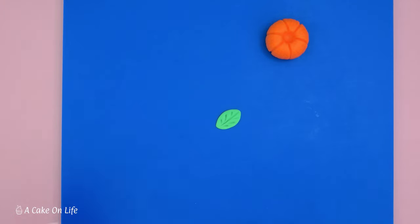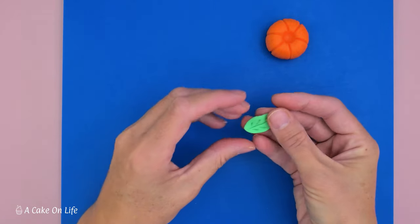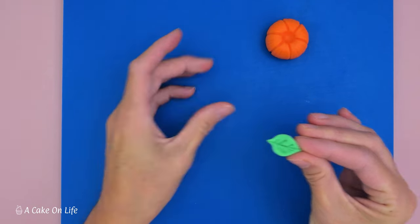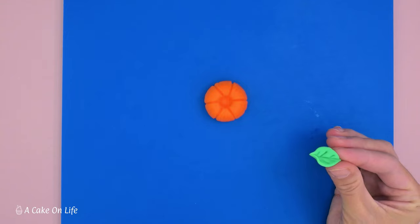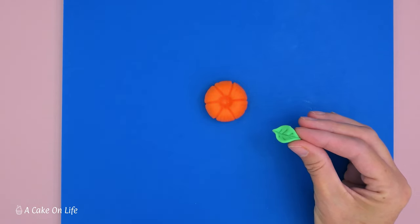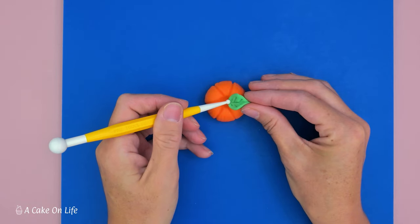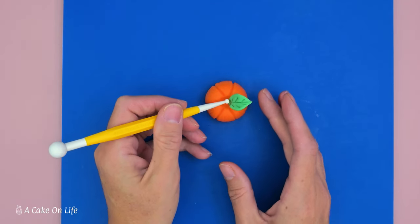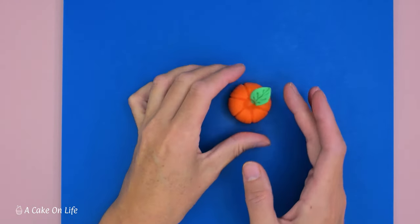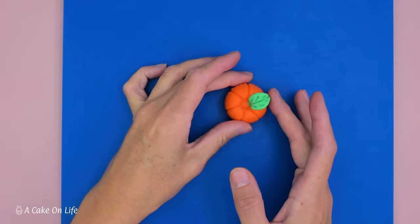And there we go, and then all we do is we pick it up and then we just gently squeeze it together and you'll get that nice kind of 3D leaf effect. Okay, so I'm just going to stick that into position with some clear alcohol, or you could use edible glue if you prefer. I'm just going to use my ball tool just to help pop that into position there. There we go, and you can shape that however you like.